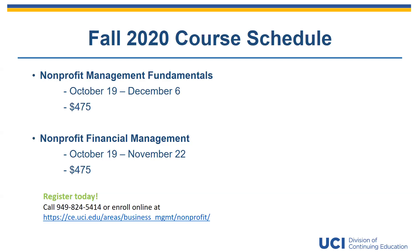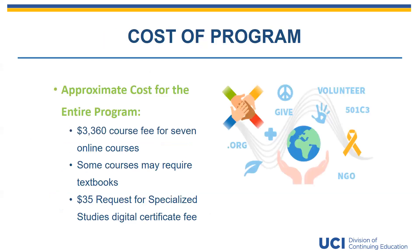Each course costs $475, so you are looking at $3,360 in course fees for the seven online classes. You simply pay for each course individually at the time of enrollment. There is also a $35 request for specialized studies digital certificate fee. Note that this amount does not include textbooks, which some courses may require — textbook information is posted on the enrollment page before you enroll.